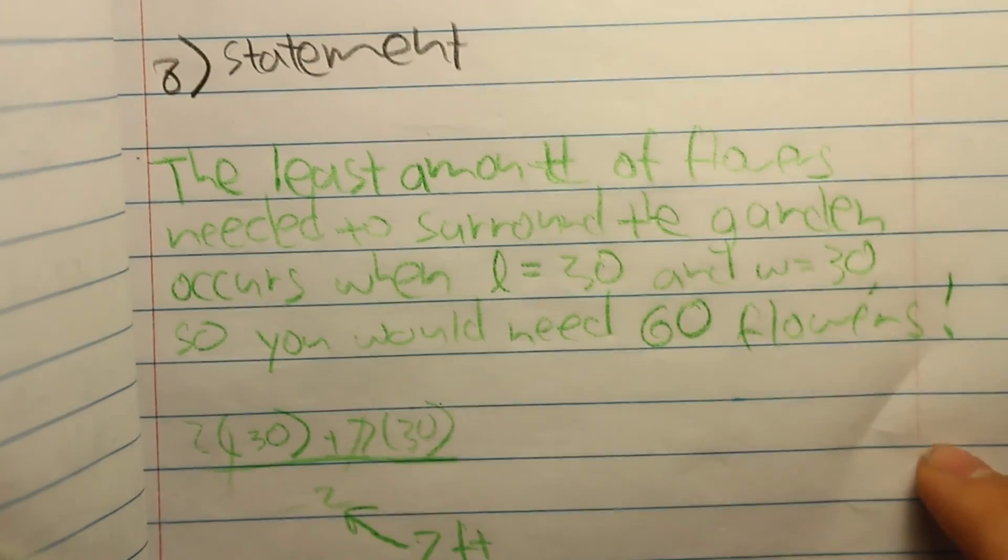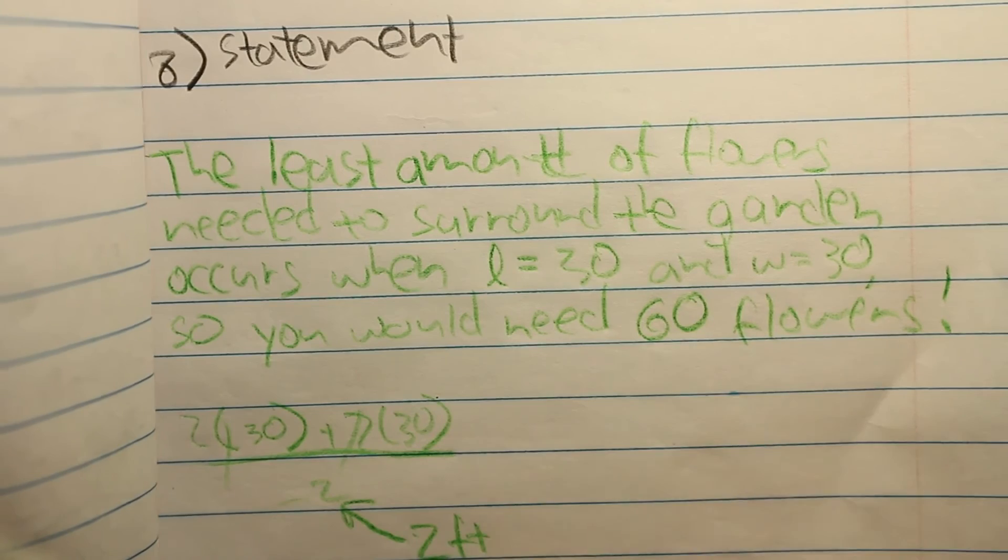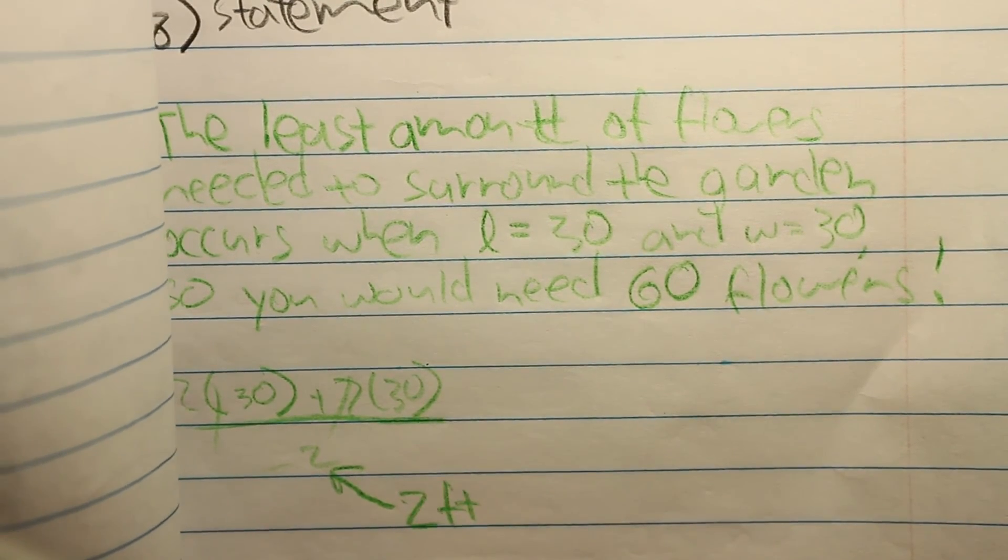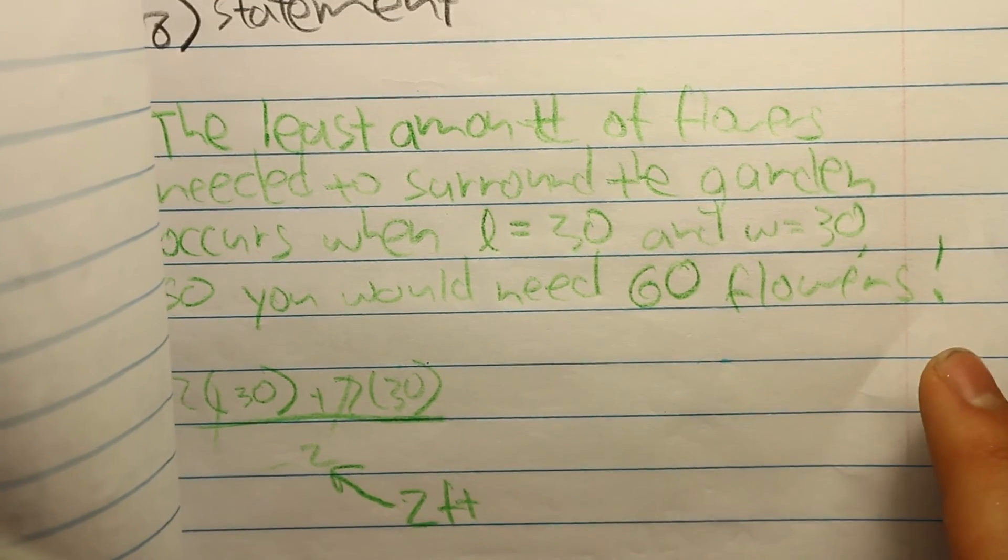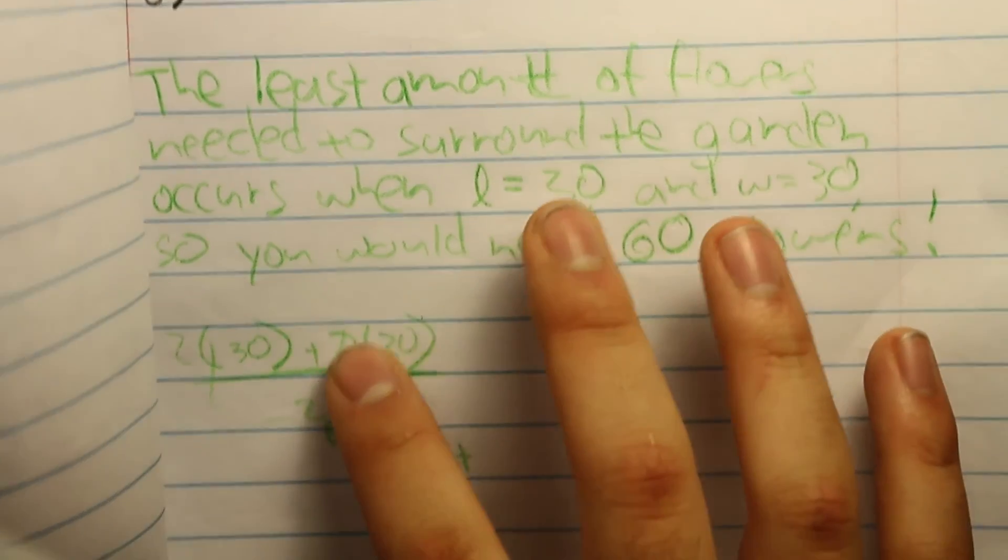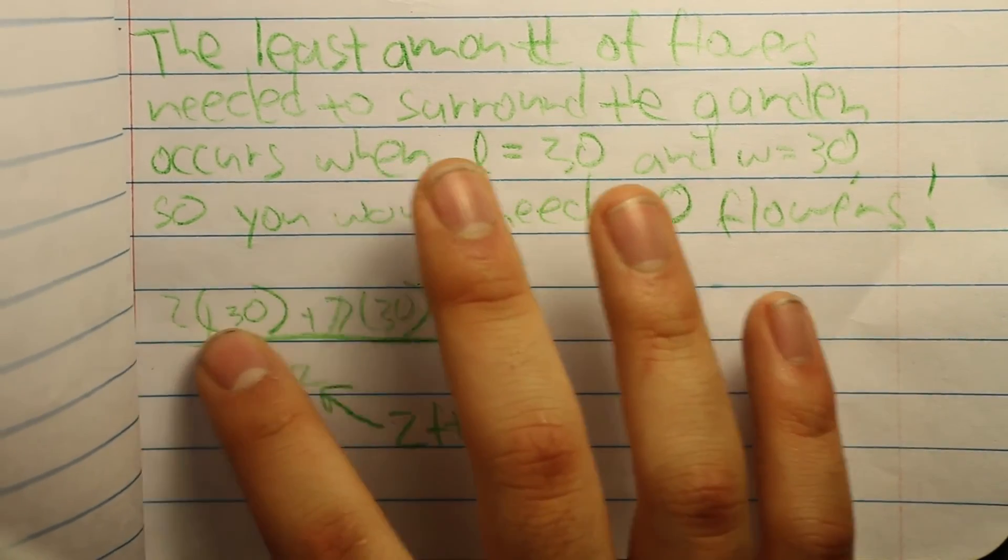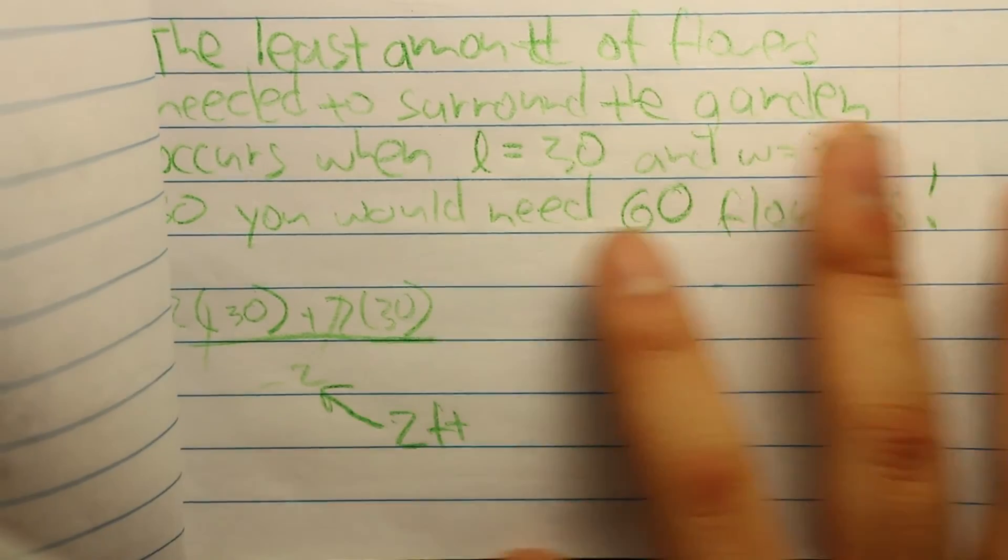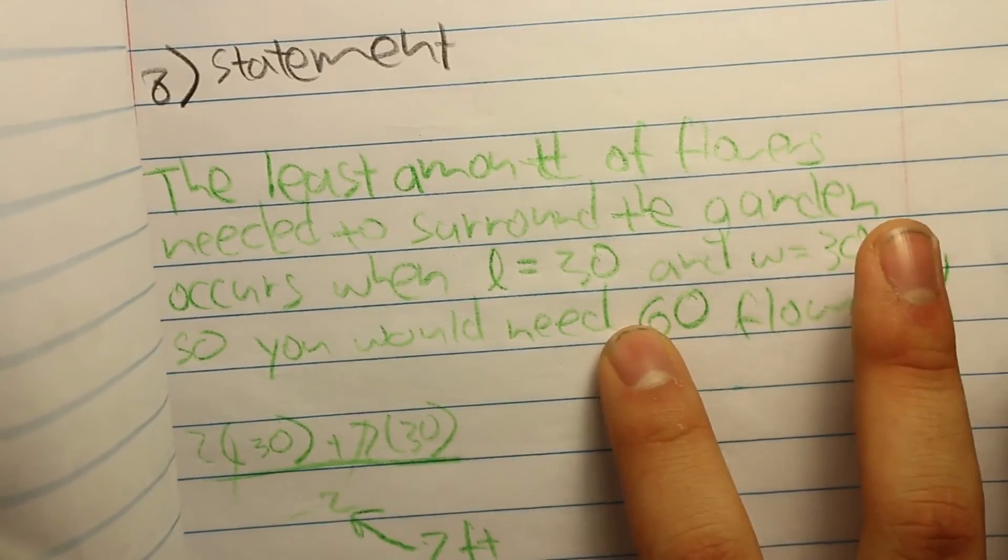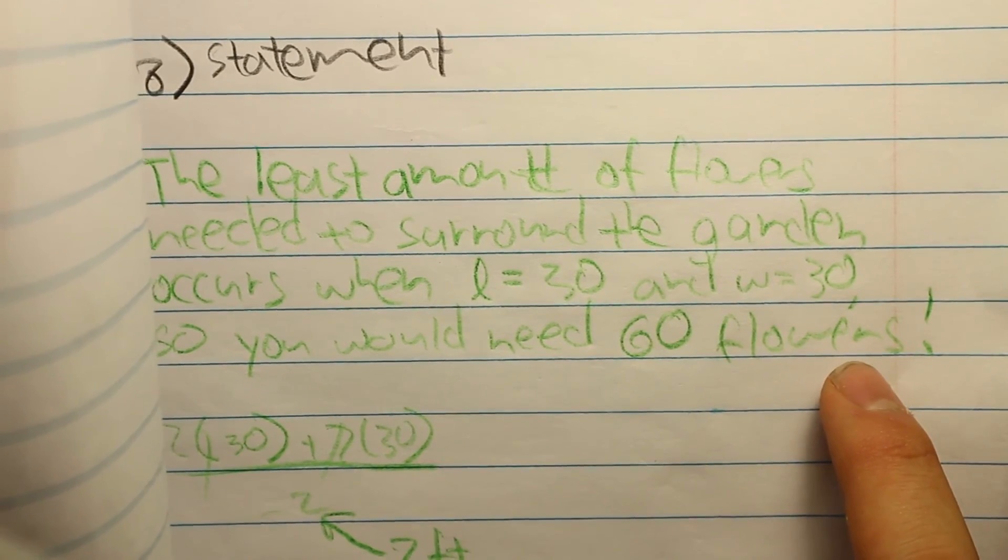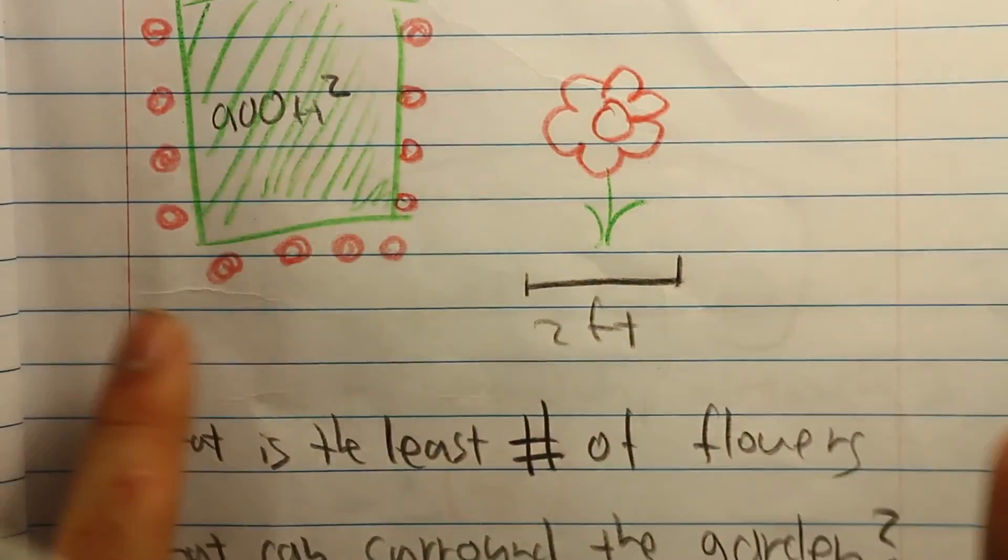So back to this. If you remember, each flower is spaced 2 feet apart instead of just 1 foot or any other distance for that matter. And you can plug it back into the perimeter formula. 2 times 30 plus 2 times 30 divided by 2. That just cancels out these twos. And you would end up with 60 flowers. So 60 flowers total will be able to surround the 900 square feet garden.